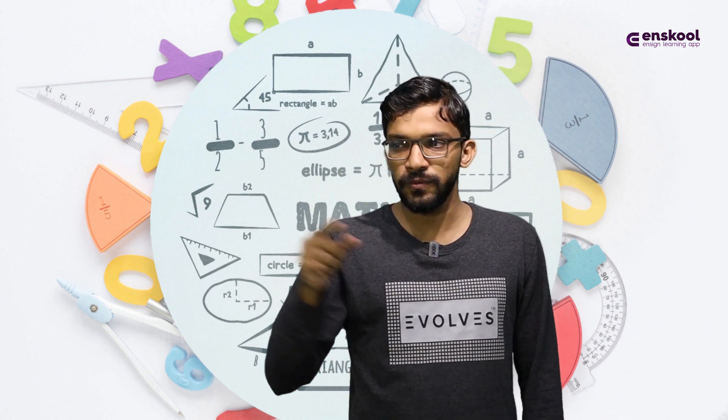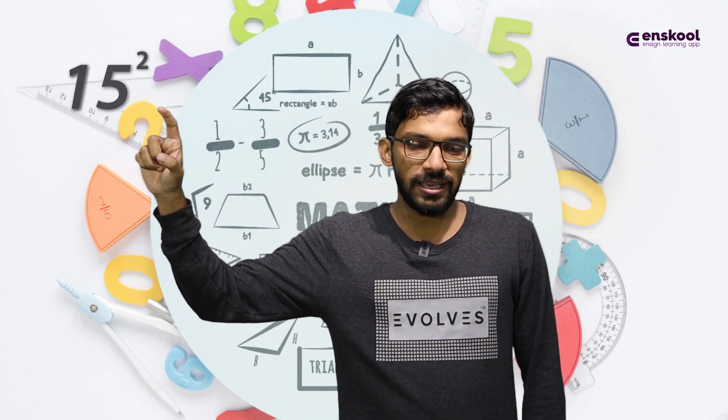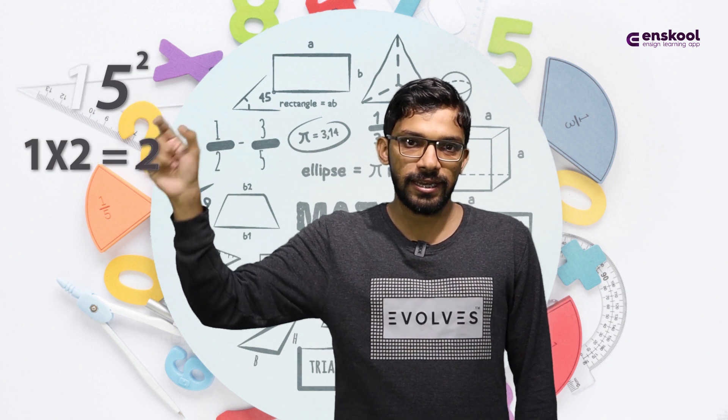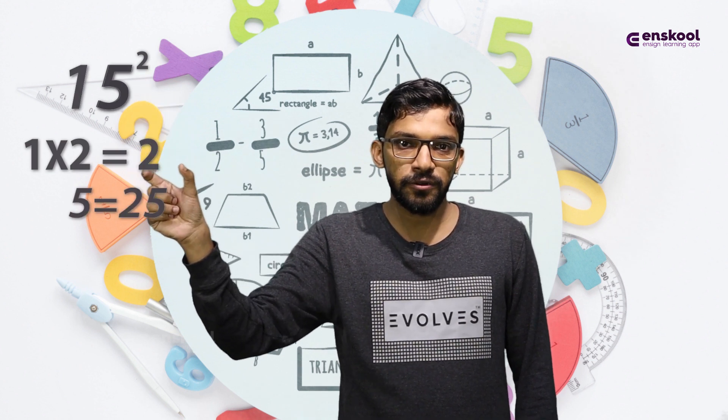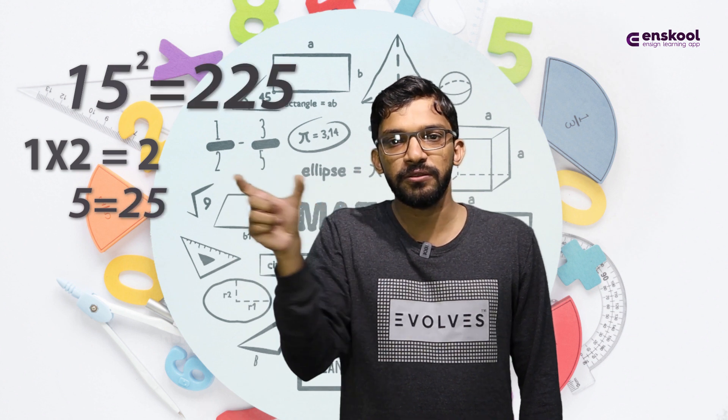Let's start with an example: 15. 15 - the first number is 1. So 1 times 2 equals 2, and the last two digits are always 25. So 15 squared is 225.